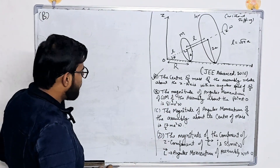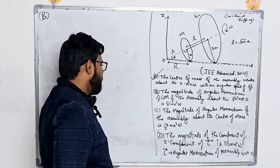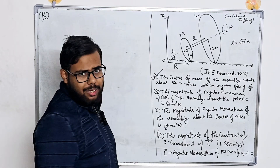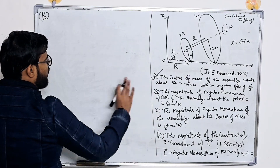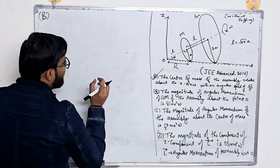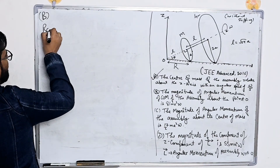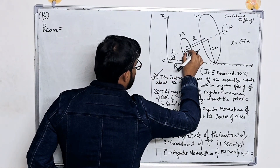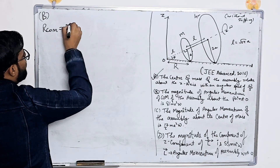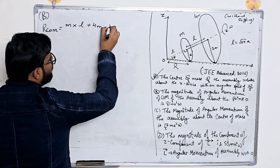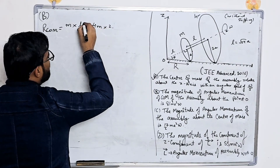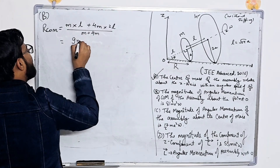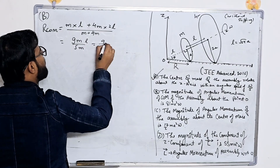Now let's check option B, which states that the magnitude of the angular momentum of the center of mass of the assembly about point O is 81Ma²ω. First we need to calculate the position of the center of mass. The mass of one disk is M and the other is 4M. So R_COM = (M·L + 4M·2L) / (M + 4M) = 9ML / 5M = 9L/5.